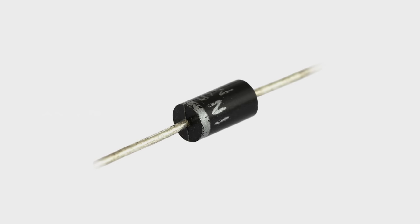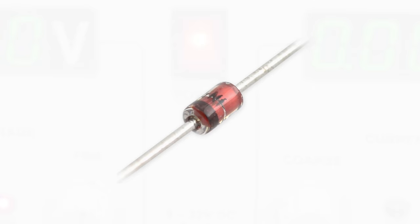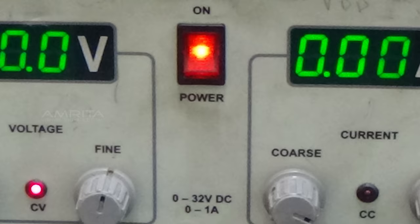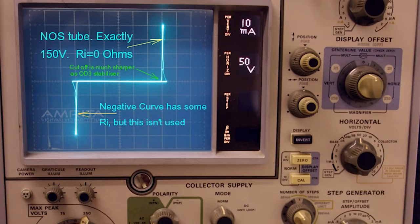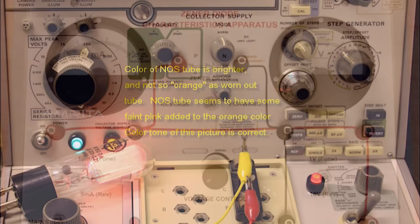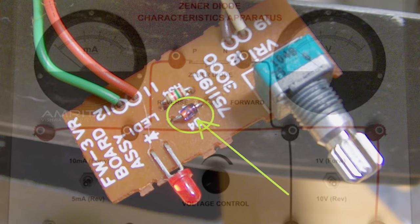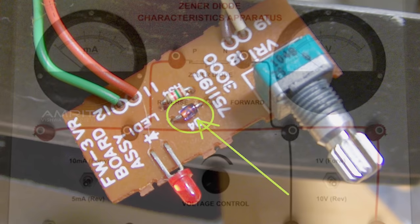Zener diode is used as voltage regulator. If the voltage across the diode exceeds a certain value, it would draw excessive current from the supply, keeping the voltage across the diode constant. The Zener diode produces a stable reference voltage across the load which fulfills the criteria of a regulator.